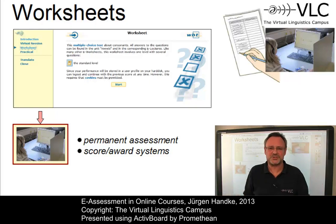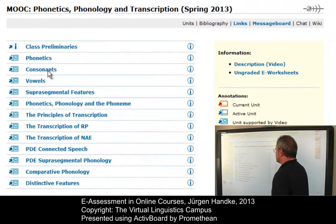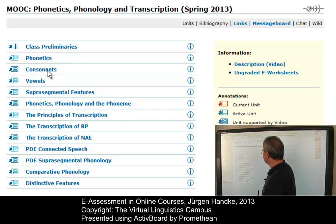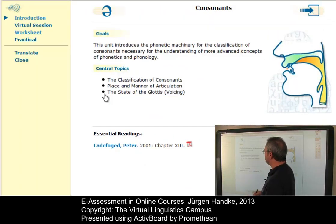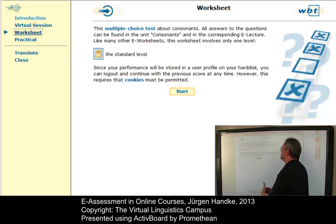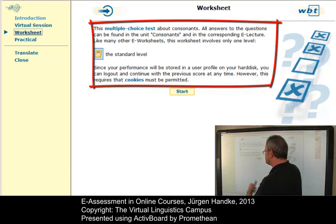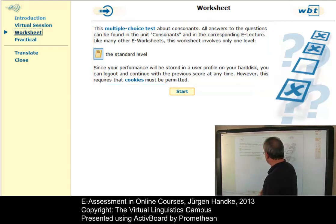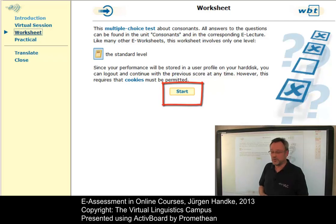But why am I telling you all this? Let's illustrate this with a real worksheet. Here is the class start site of the Massive Open Online Course Phonetics, Phonology and Transcription. I will now illustrate the use of a worksheet on the basis of the second unit labeled Consonants. A simple click on its name will load the unit start site. On the unit start site, we find a link labeled 'worksheet,' and a click on this link will load — well, not directly the worksheet. First, it loads an introductory text which informs you about what you have to do in this worksheet and where you find further information. A click on the button 'start' will load the worksheet into a template, which is the same for all worksheets, irrespective of the worksheet type.